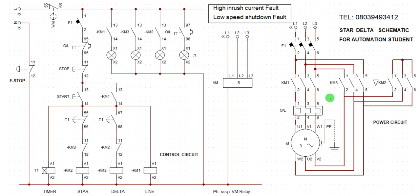Let us discuss the conventional operation sequence of star-delta. When you initiate the operation, the line contactor (main contactor) and the star contactor both get activated simultaneously. After a few seconds — about five seconds — the star contactor gets de-energized and the delta contactor gets energized. Low speed is when the motor is running on star; high speed is when it's running on delta. When star is disengaged and delta is engaged, the motor goes to high speed.